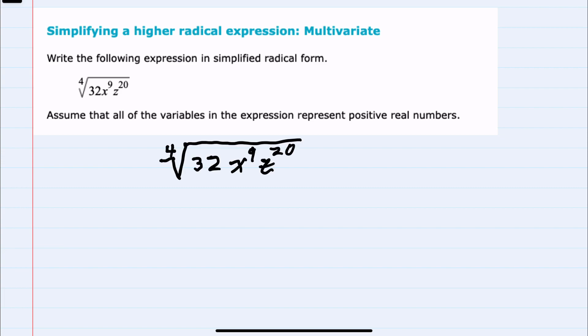We have the expression the fourth root of 32x to the ninth z to the twentieth. To simplify, we want to pull out as much as possible from this fourth root.